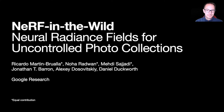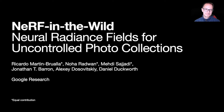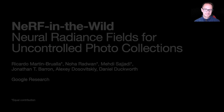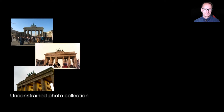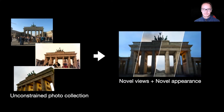In this work, we present NERF in the Wild, an extension of neural radiance fields, or NERF, that can be used on the sort of unstructured and uncontrolled photo collections you might find on the Internet. Our system takes as input an unconstrained photo collection of some scene — in this case the Brandenburg Gate in Berlin — and produces as output novel images of that scene where the camera can be moved, and also the appearance of the scene can be changed.